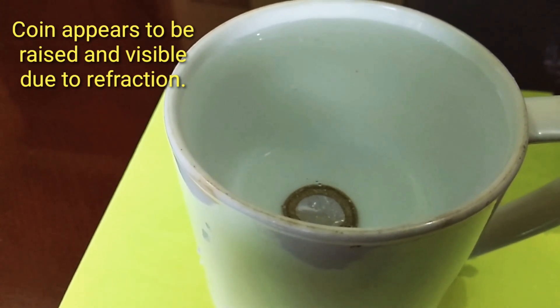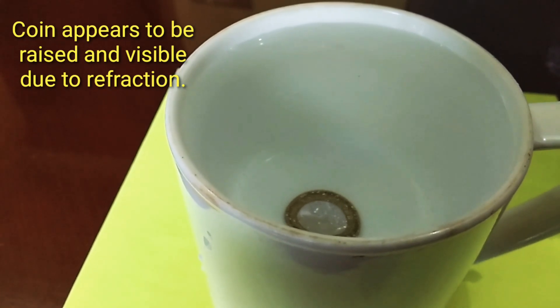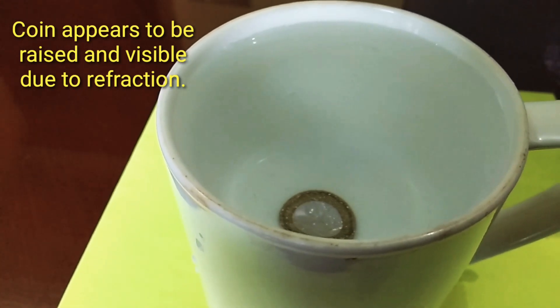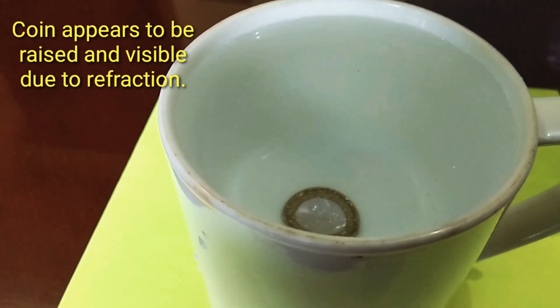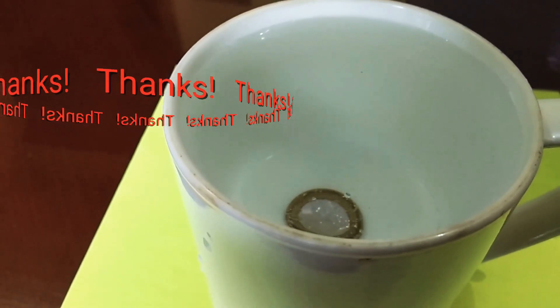The coin has not changed its position. Light rays being refracted reach the camera and the coin is visible. It's the magic of refraction because of lateral displacement.